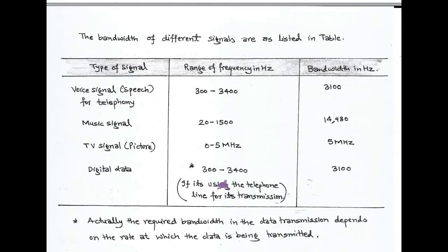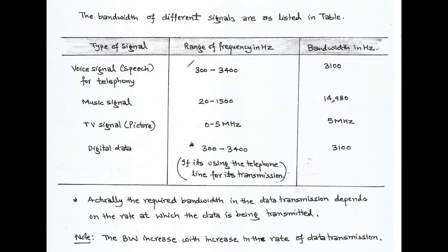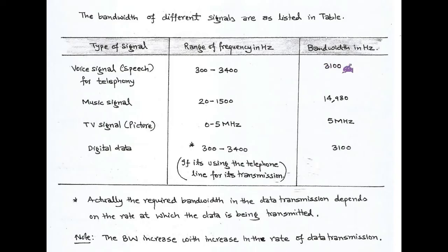Now we discuss the bandwidth of different signals listed in a table. First, voice or speech signals used in telephony have a frequency range of 300 to 3400 Hz, giving a bandwidth of 3100 Hz. This is the band of frequency through which voice signals in telephony are transmitted. Similarly, music signals have a frequency range of 20 to 15,000 Hz with a corresponding bandwidth of 14,980 Hz.